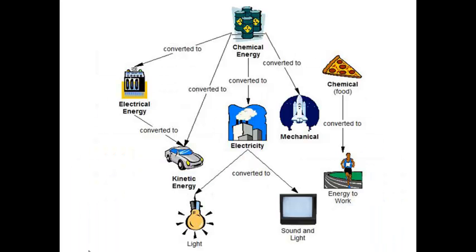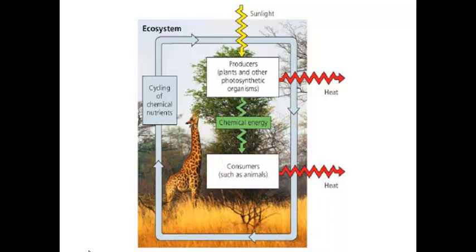Here are a variety of examples that demonstrate energy transformation. We see the chemical energy in food converted to the energy of muscle contraction. In the center, we see chemical energy being converted to electricity, which then can be converted to either light or sound from our TV. Another biological example is the ecosystem in which sunlight, the ultimate form of energy, is converted to chemical energy in the ecosystem.